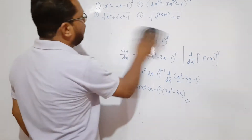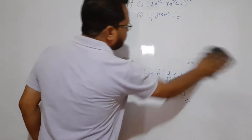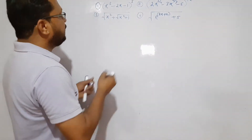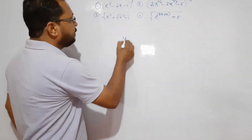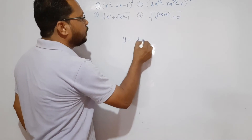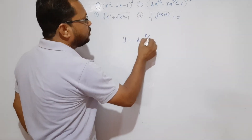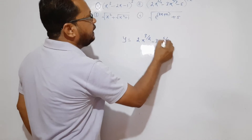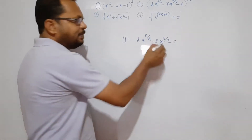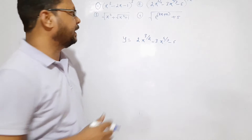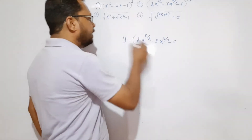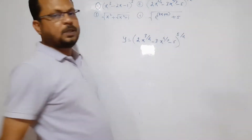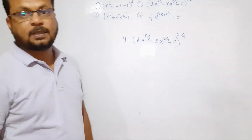Let us solve example number 2. y is equal to (2x^(3/2) - 3x^(4/3) - 5) raised to 5/2. It seems an algebraic function again, but it is in brackets raised to 5/2, so it becomes a composite function with an algebraic layer inside.